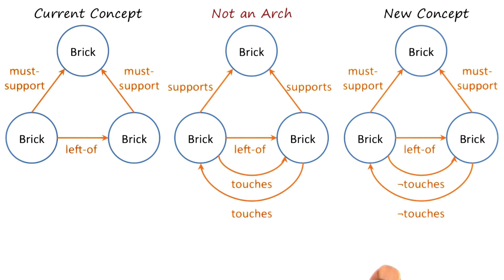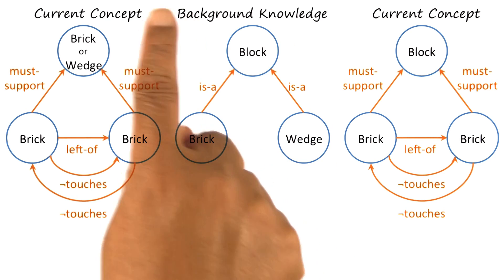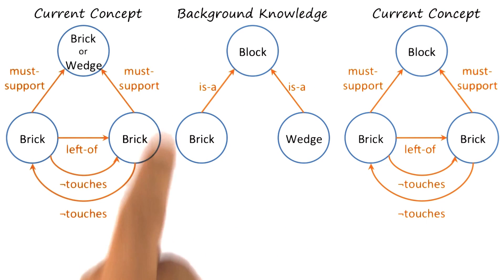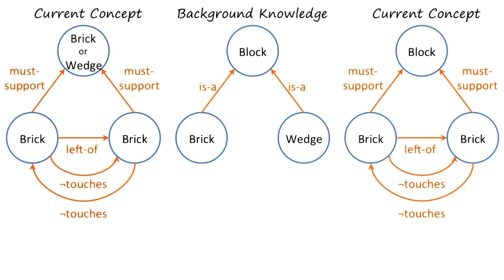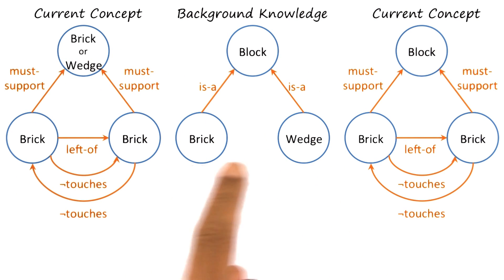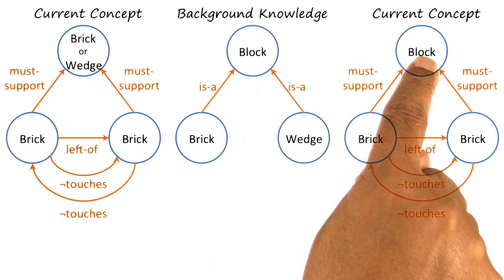This technique is very useful if a teacher is available that can give the examples in a good order so that effective learning can occur. In that technique of incremental concept learning, we also consider the role of background knowledge. If the current concept characterization has brick or wedge at a node, and the learner has background knowledge which tells it that bricks and wedges are examples of blocks, then the learner can generalize from brick or wedge to block.